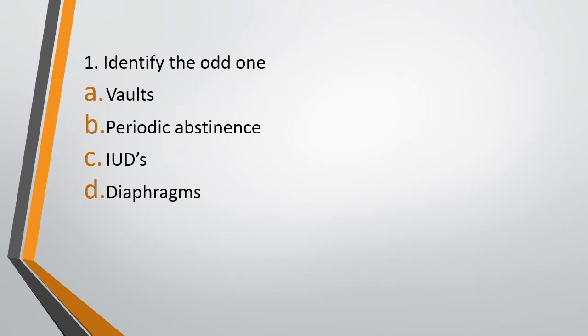Question 1. Identify the odd one out. Option A: VALS. Option B: Periodic Abstinence. Option C: IUCDs. Option D: Diaphragms. You have to identify which of these 4 options is the odd one out. The correct answer is Option B — Periodic Abstinence is the odd one out, because Periodic Abstinence is a natural method of contraception.